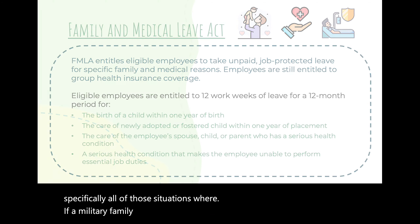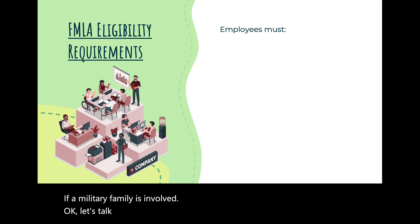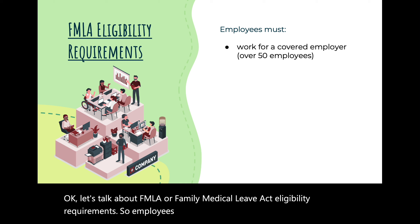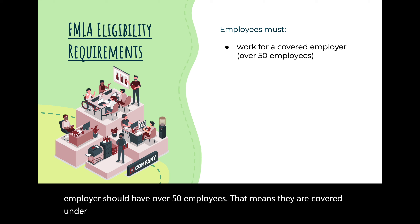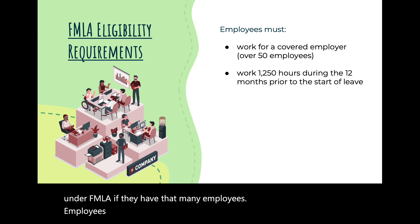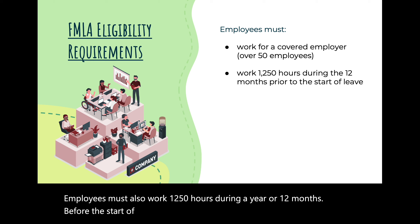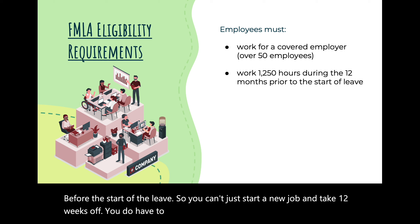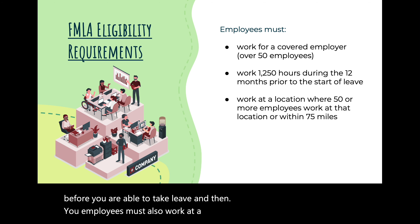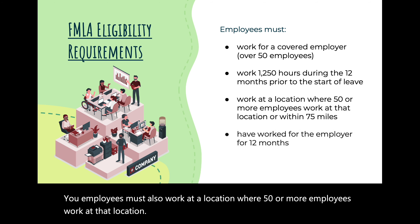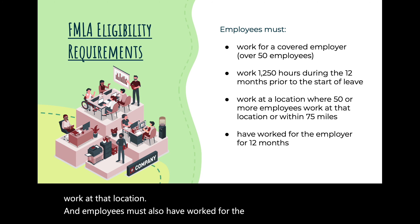For FMLA eligibility, employees must work for a covered employer with over 50 employees. Employees must also work 1,250 hours during the 12 months before the start of leave — you can't just start a new job and take 12 weeks off. Employees must also work at a location where 50 or more employees work, and must have worked for the employer for 12 months before taking leave.